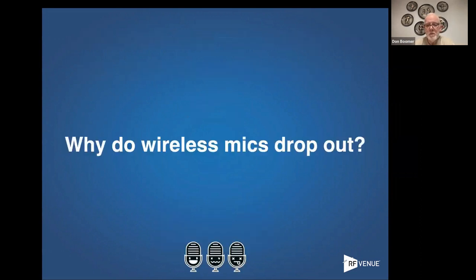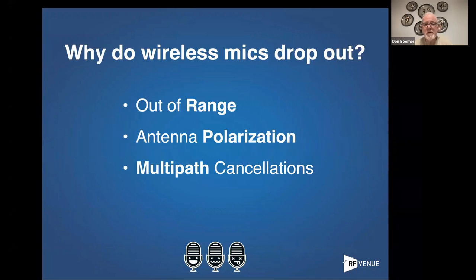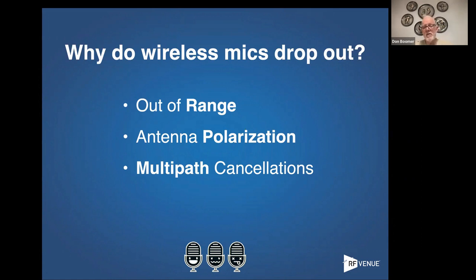So let's shoot through this and see where we end up. The question we get the most: why do wireless mics drop out? Basically it's because your radio doesn't get a signal that is strong enough and clear enough for it to understand the difference between your intended transmission and all the rest of the noise. Out of range — which doesn't mean distance — antennas that aren't properly polarized or angled to each other, and reflections within the room: these three things combine to give your receiver information it can't quite figure out, so it just gives up.